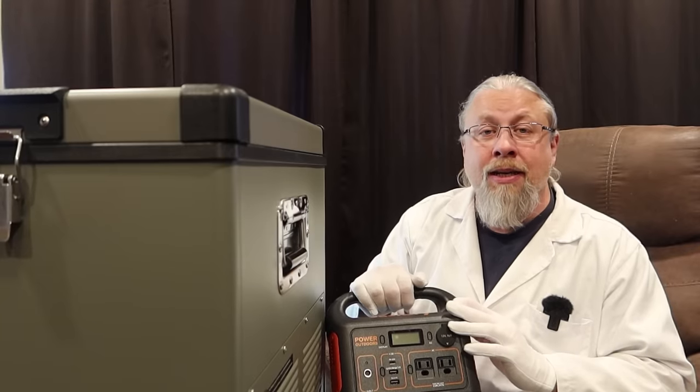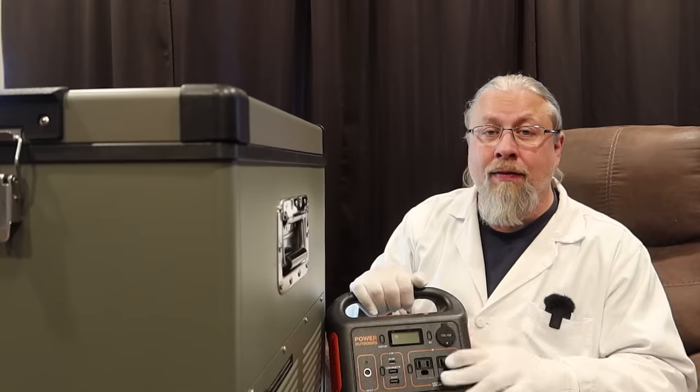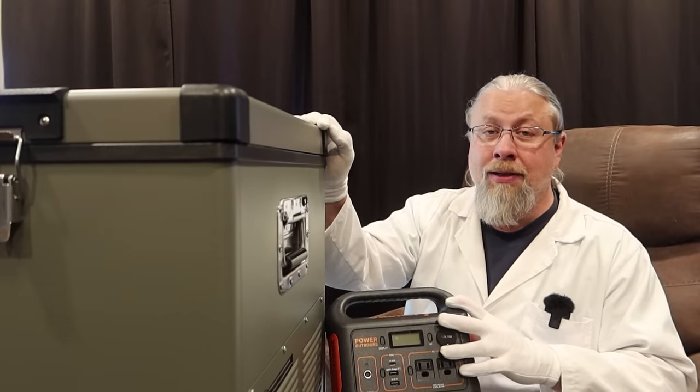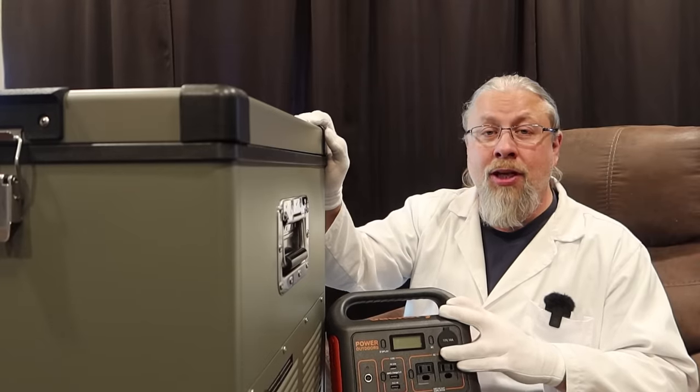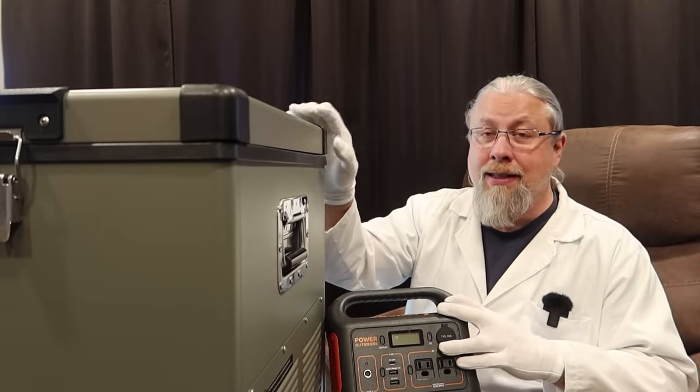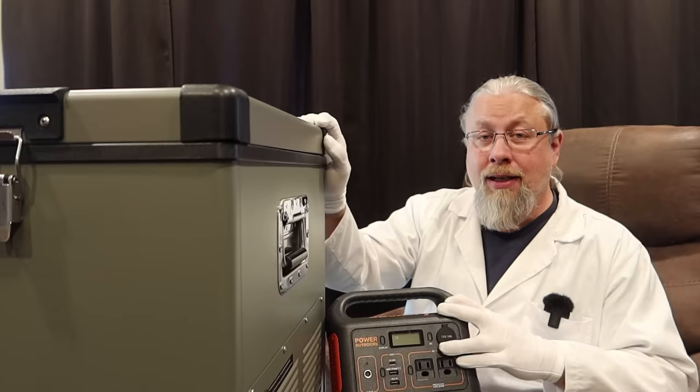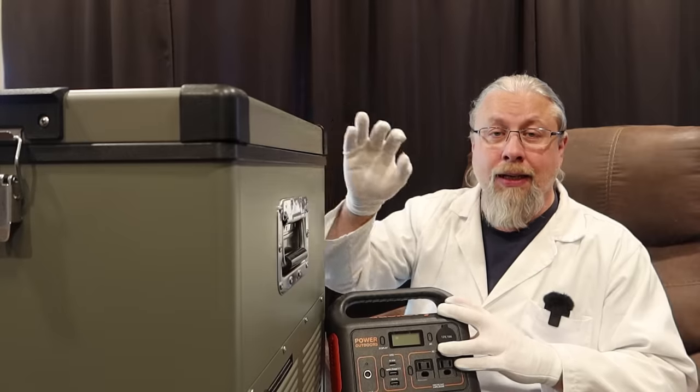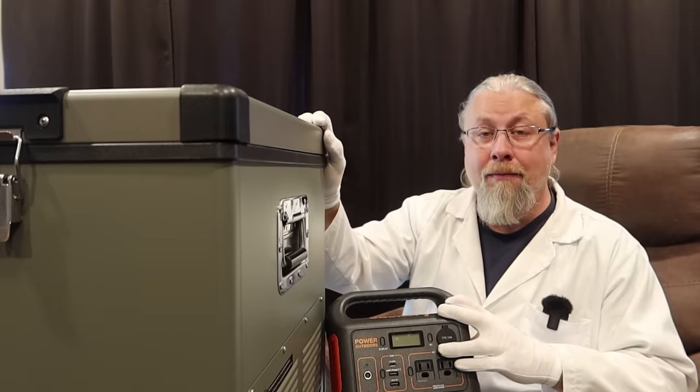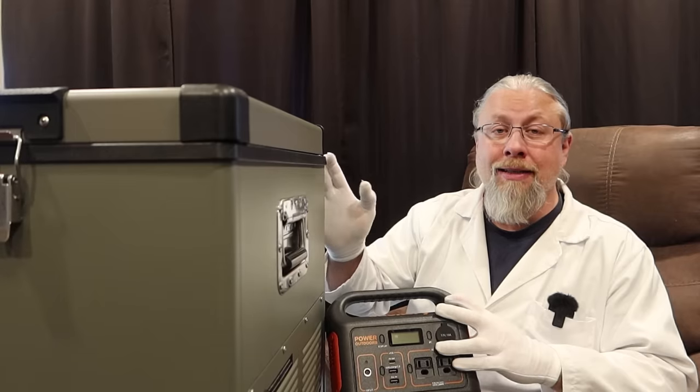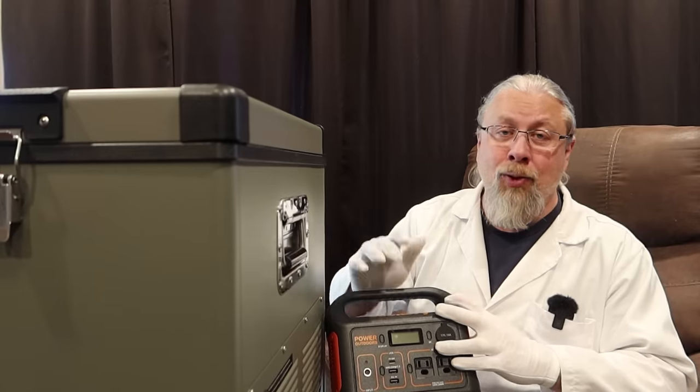And of course, every power station is going to be different. It's going to have different amount of usable power inside, and a lot of these refrigerators have different power consumptions, too. You can't just assume that all IceCo models are going to have the same power consumption, because in this case, this one actually uses significantly more power than the smaller VL40 model, but that's expected because this thing is a much bigger refrigerator. Generally speaking, the smaller the refrigerator, the less power it's going to consume over a 24-hour period because it has less space inside that has to keep cold.